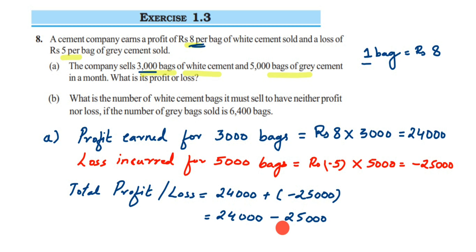When we subtract, we get 1,000, but the sign will be negative because 25,000 is greater than 24,000. So the answer is minus 1,000, indicating that the company is getting a loss of rupees 1,000. That's the answer to the first question.